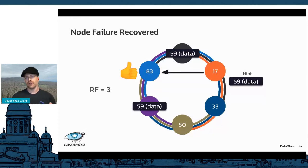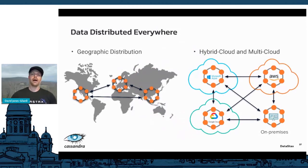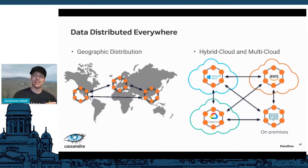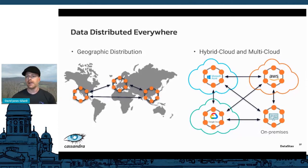Cassandra uses that same replication to replicate across data centers. Looking at the data centers going across the globe, if I write data to a node on the US west coast, it immediately becomes available at the speed of wire to other data centers. You could read that from China — important for geolocating data close to your users to reduce latency. Cassandra is also completely vendor agnostic, deployable across multiple cloud providers, on-prem, or mixed in a single database.